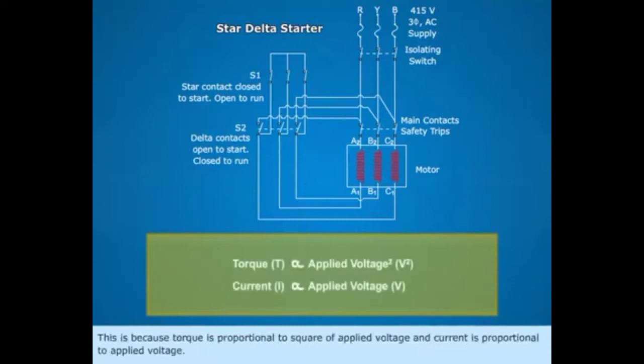This is because torque is proportional to square of applied voltage and current is proportional to applied voltage.